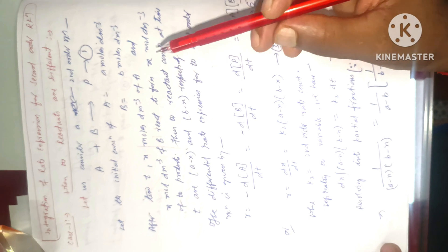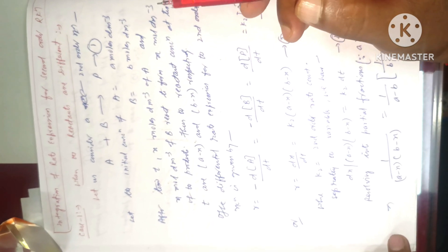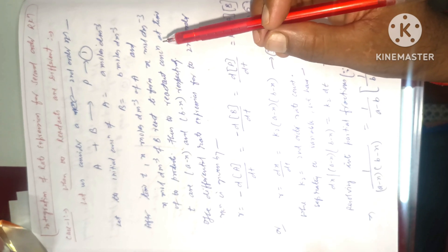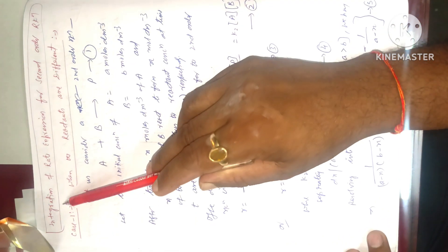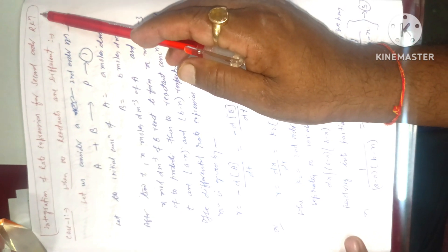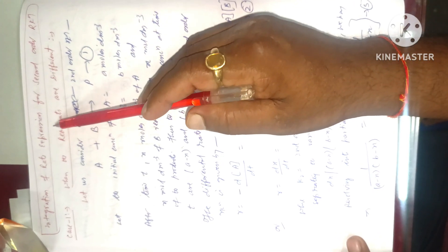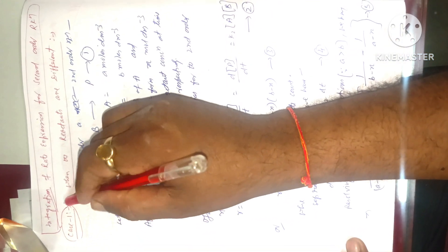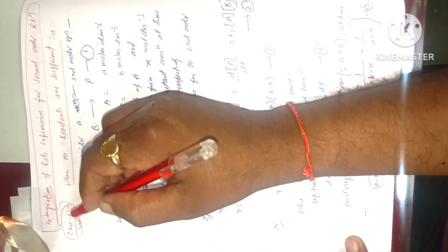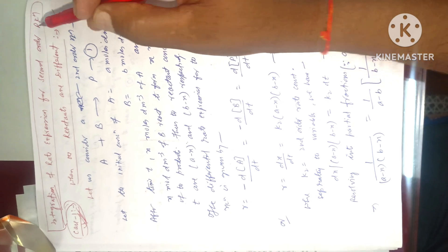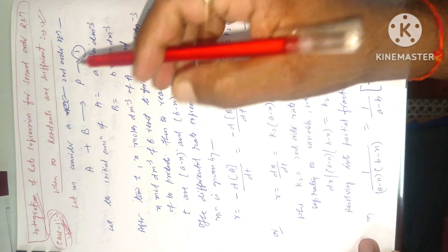Good morning. Today we will discuss a very important topic in physical chemistry that generally comes in exams. The topic is integration of rate expression for second order reaction — how we calculate the integrated rate equation for a second order reaction. There will be two cases, and we will explain case one in this video: when the reactants are different.